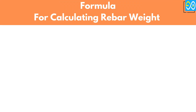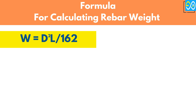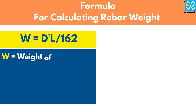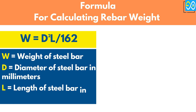Formula for calculating rebar weight. First, if the length of the bar is in meters: w equals d squared times l over 162. Where w equals weight of steel bar, d equals diameter of the bar in millimeters, and l equals length of the bar in meters.